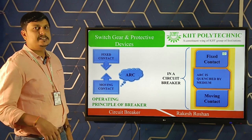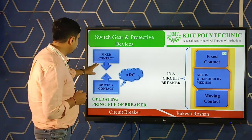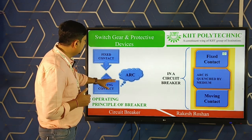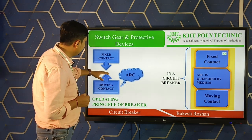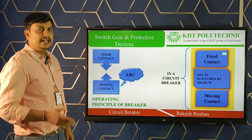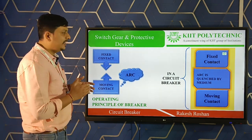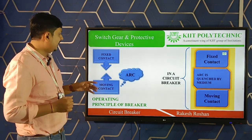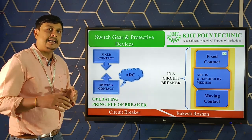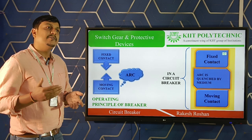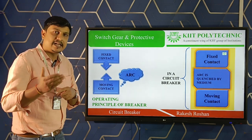A circuit breaker basically consists of a fixed contact and a moving contact. Whenever a fault occurs, an arc is produced between the fixed and moving contacts. When a fault occurs, the moving contacts get separated from the fixed contacts. During this process, the surrounding air is ionized — the current density of the surrounding air is high — and as a result, an arc is produced.